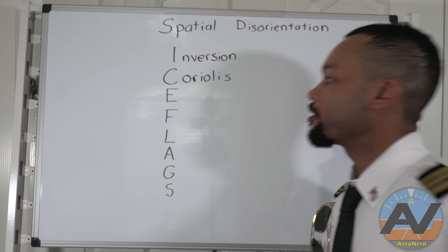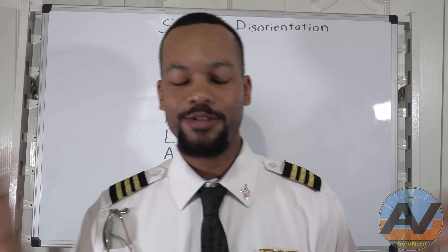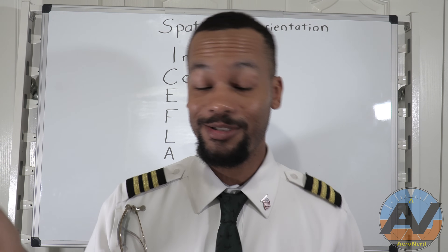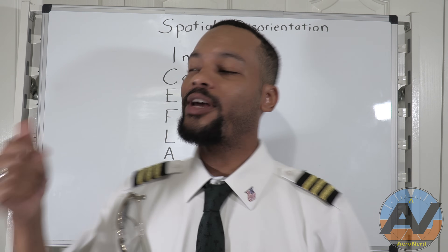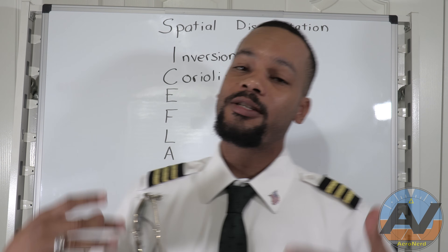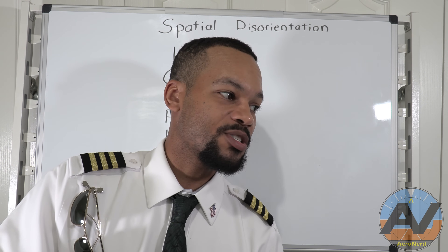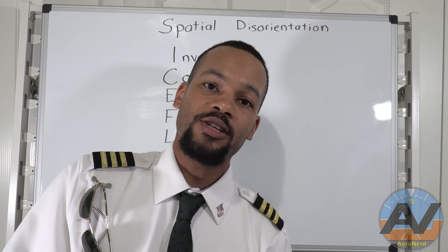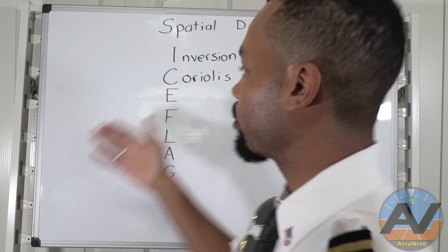Next is Coriolis. If you've ever been spinning in a chair and then put your head directly down, it really increases the disorientation effect. Well, that's exactly what Coriolis is. This can also happen in the plane and really disorient you — say you're doing a really steep turn and then you drop your pen and look down. That crazy effect you get is literally what Coriolis is.